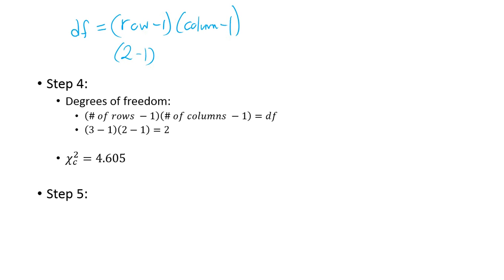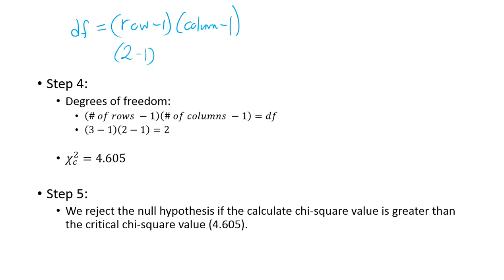So step five is stating your decision statement. So we reject a null hypothesis if the critical chi-squared value is greater than the calculated chi-square value. Otherwise fail to reject. So it should say otherwise fail to reject on there saying what happens if you don't. So that would be your step five. So again, we're looking to see if it's greater than 4.605. If it is, we reject.